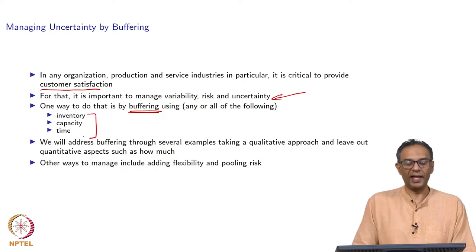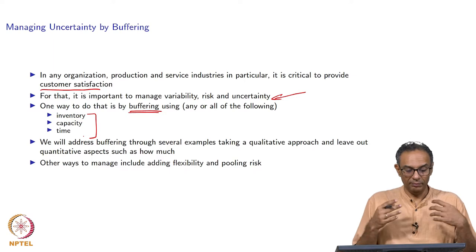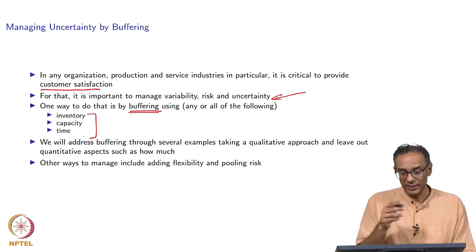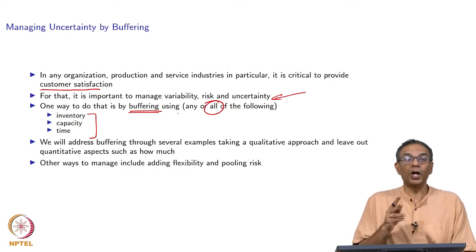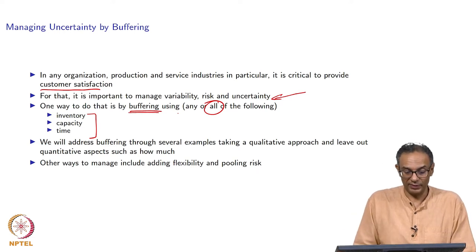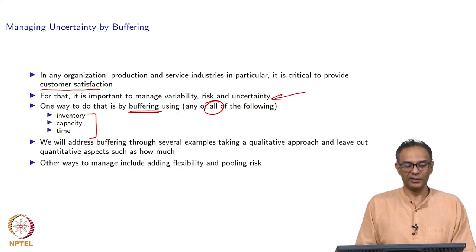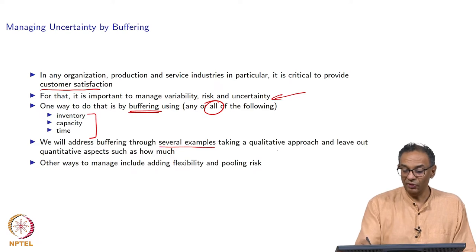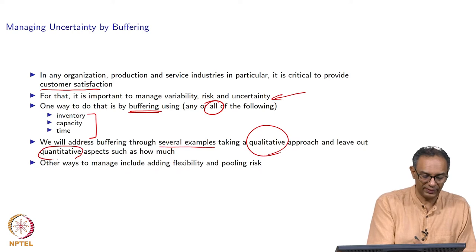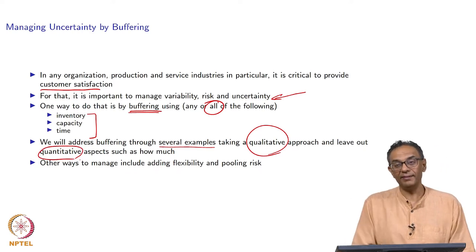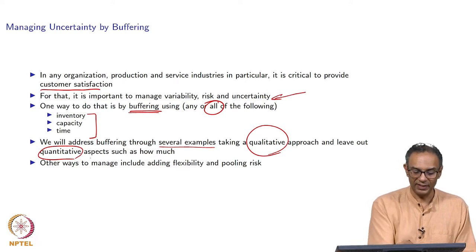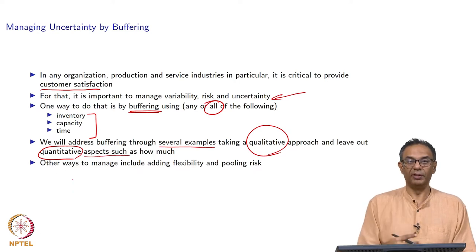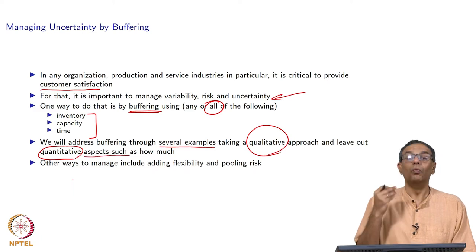We could do a combination of carrying inventory, having spare capacity or even relieving capacity, and also buffering by time. We will show five examples. We more often than not do a combination — probably all of them for the most part, or any subset. We will take a qualitative approach, not quantitative. The quantitative discussion will come in the next lecture. In this lecture, we are mainly touching upon qualitative aspects — what to do for buffering, not how much buffer to carry.